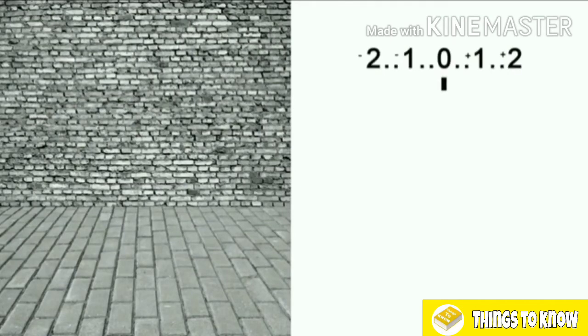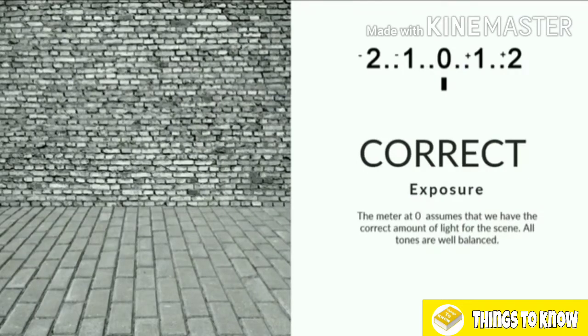Here we've got a photograph of a wall — not the most exciting photograph, but it serves the purpose of displaying these differences in stops as we cycle through using the light meter. With the light meter at 0, I know that I have the correct exposure. The light meter assumes we have the correct amount of light for the scene and all the tones are well balanced — the dark tones, the light tones, the bright tones, and the black tones. We can see detail throughout all of this photograph, and everything looks correct to our eyes.